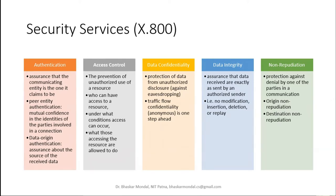Non-repudiation is protection against denial by one of the parties in communication. As the sender, you cannot deny that you sent the message. On the other hand, if the receiver has received your message, they cannot deny having received it. Origin non-repudiation means the origin cannot say 'I did not send it,' and destination non-repudiation means the receiver cannot say 'I did not receive it.'